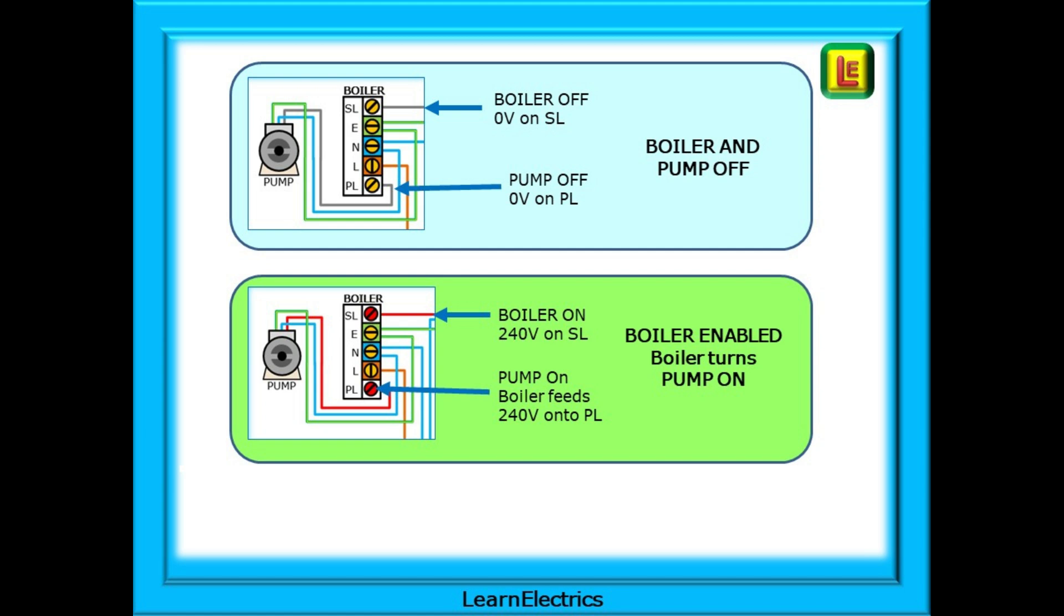The boiler and the pump work in unison with each other. If the boiler is off, the pump will also be off, as shown in the blue box. The green box shows the boiler enabled. 240 volts appears on the SL terminal and switches the boiler on. An internal connection in the boiler feeds 240 volts to the pump and the pump starts. Some boilers have an overrun facility. When the boiler turns off, the pump continues to circulate water for a few minutes to allow the hot water in the system to cool slightly, thereby avoiding heat damage to sensitive parts. Some boilers don't have this and we will look at this on a later slide.